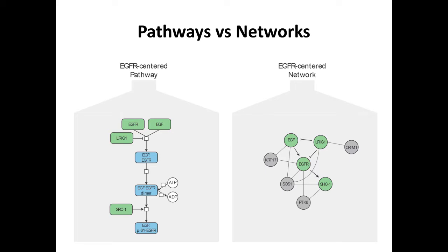What is the difference between a pathway and a network? A pathway, as many people use the term, refers to the classic mechanistic model we learn in Biochemistry 101: an ordered series of events occurring in the cell involving macromolecules, organelles, and other entities that interact with each other in a particular sequence to yield a biological outcome.